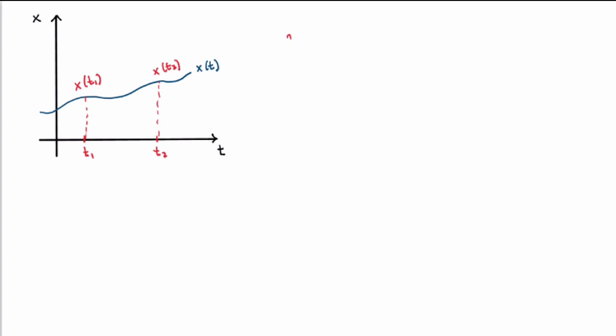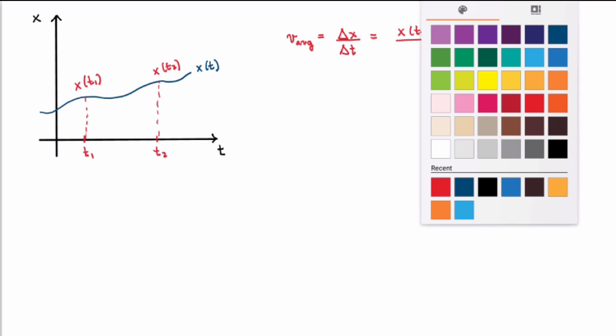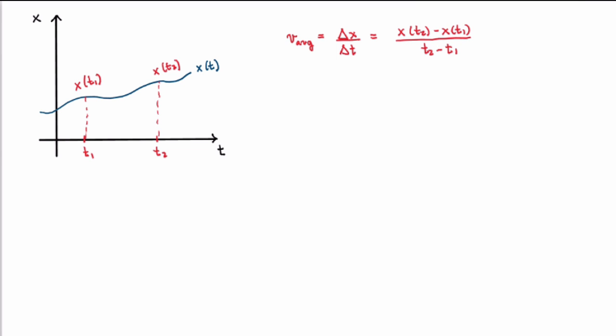And then you can define the average velocity as usual as being the distance traveled, Δx, over the time interval. More precisely, that would be x(t₂) minus x(t₁) divided by t₂ minus t₁. Okay, this is all good, but this is not the velocity that the cop was talking about.